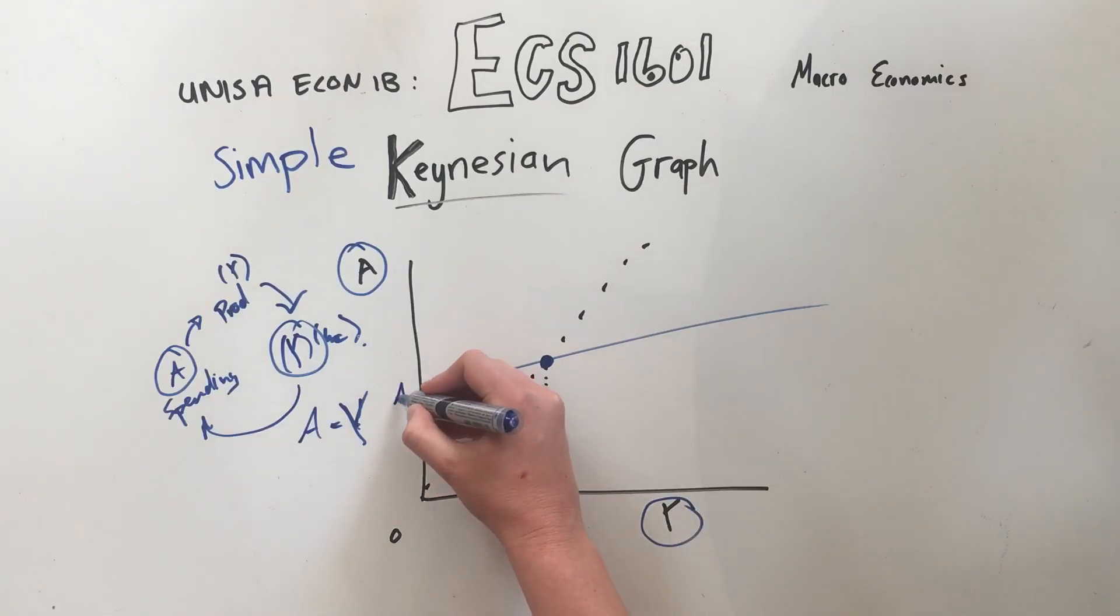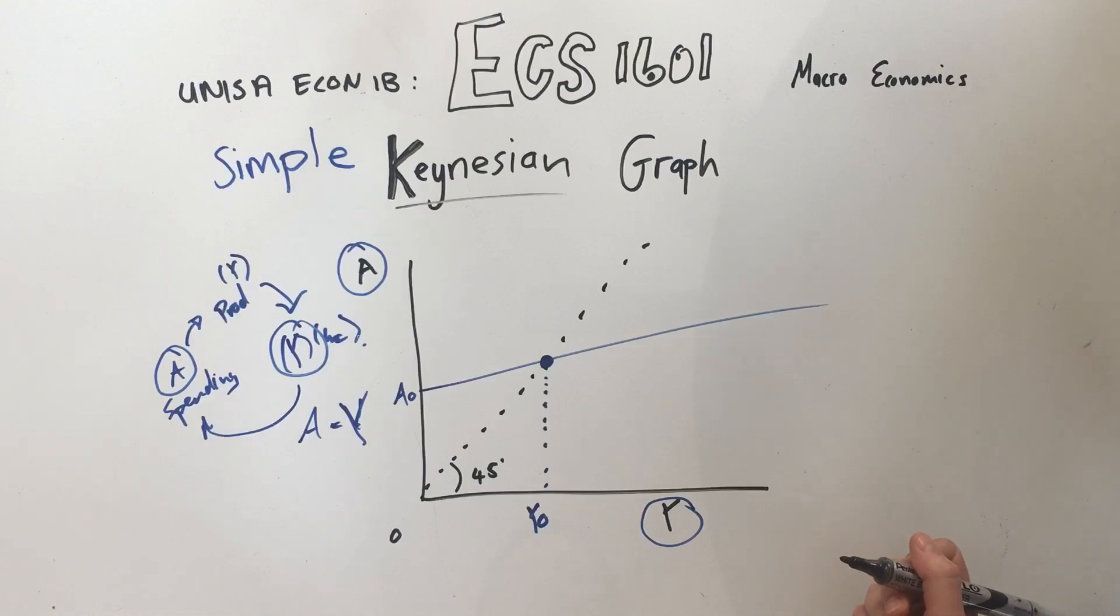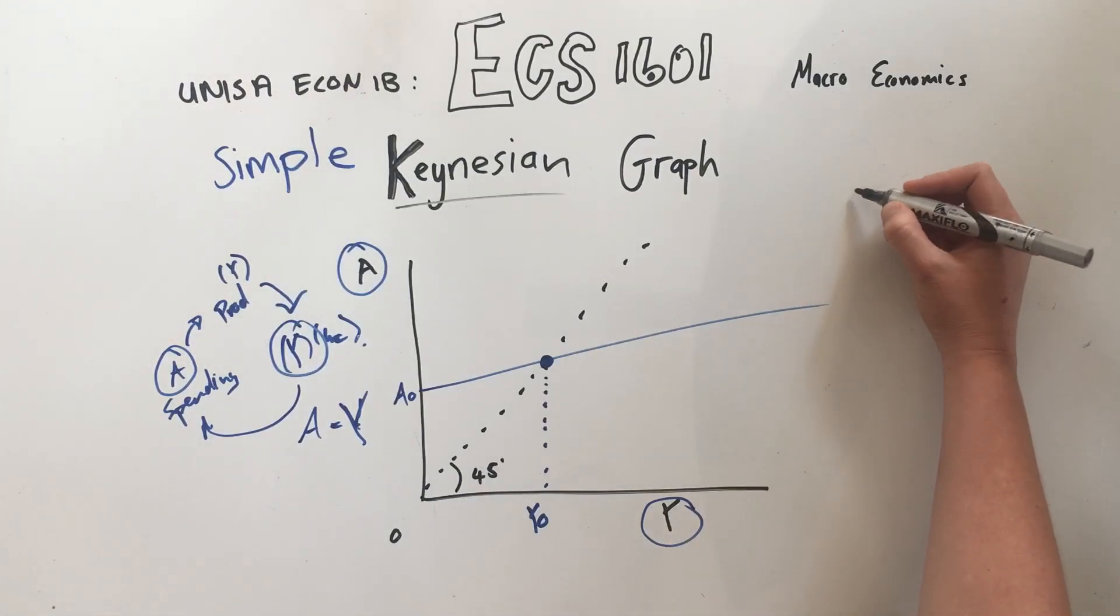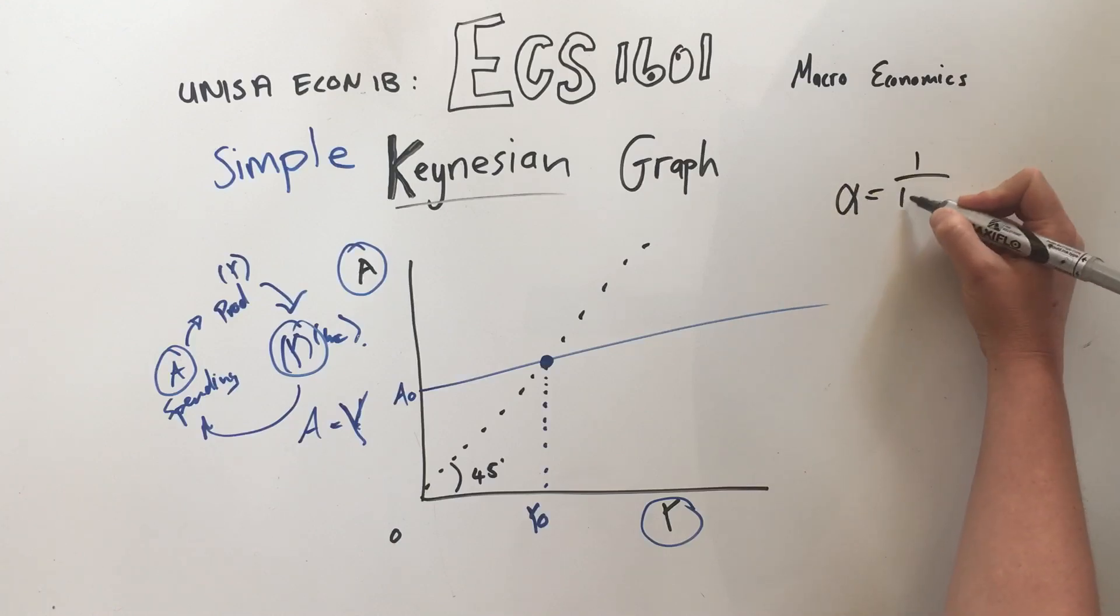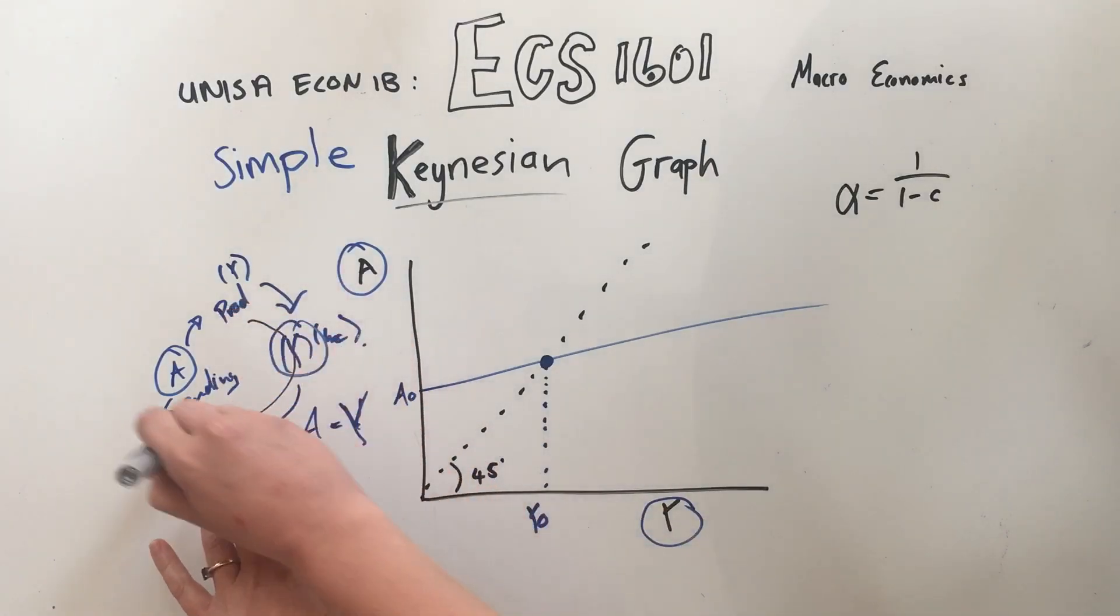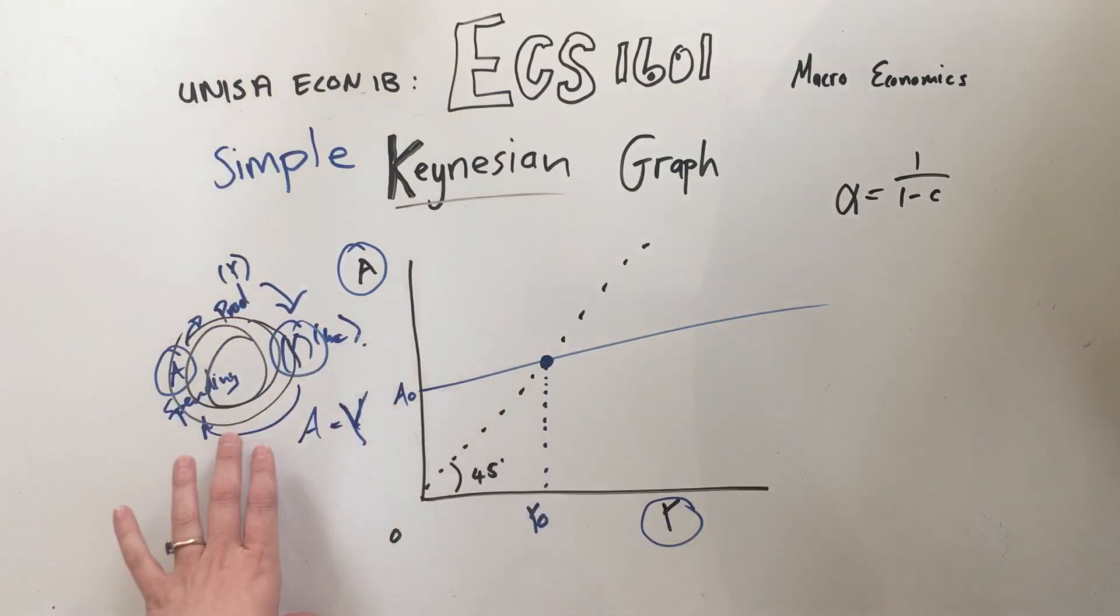That's how easy it is, guys. There's different ways that they can complicate this question, but it's not really that complicated. So the first thing you need to understand is the multiplier. In my circular flow, the three flows in the economy, I speak about the multiplier at the end of the video, so watch that one again if you're not familiar. The multiplier is equal to one over one minus small c.